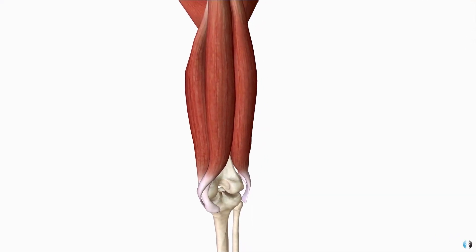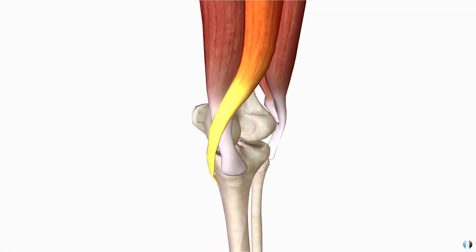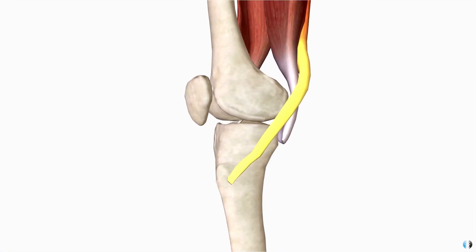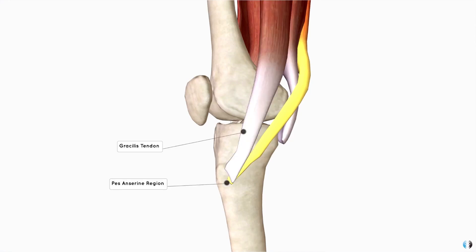So next up is the hamstring tendon graft. This graft is most commonly taken from the semitendinosus muscle, which is the hamstring muscle that runs from the posterior thigh and whose tendon swoops around to the medial side of the knee before inserting onto the anteromedial tibia in an area called the pes anserine region. The gracilis tendon sits very close to that of the semitendinosus tendon, and thus a hamstring tendon graft is sometimes enhanced by taking some of the gracilis tendon as well.